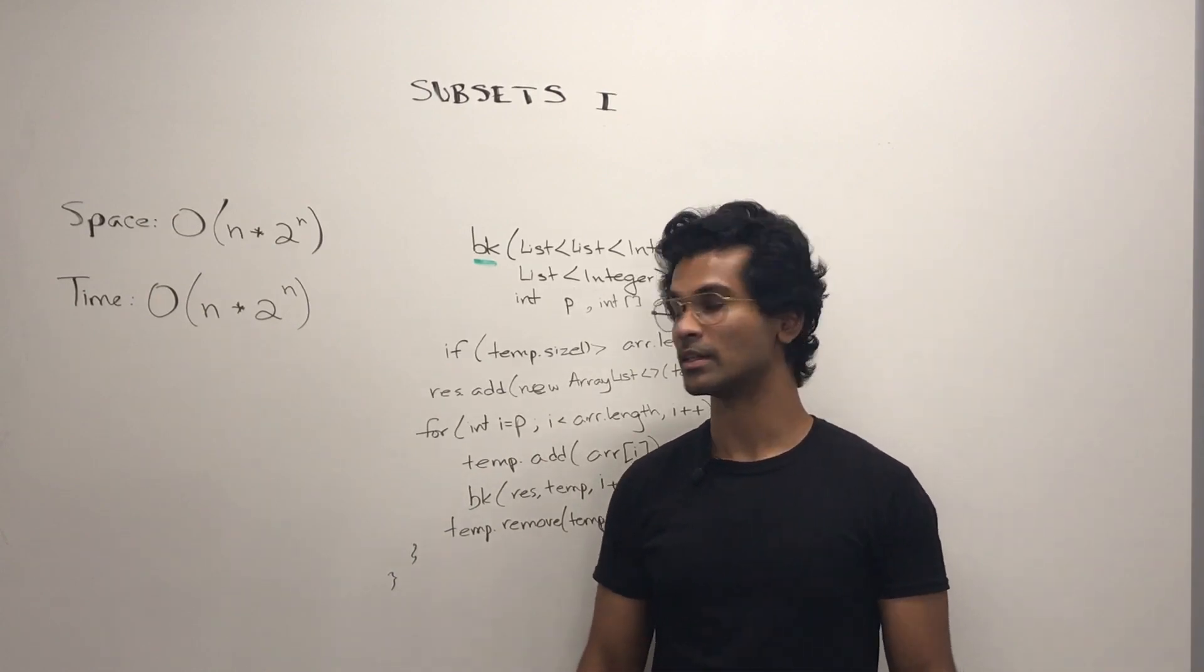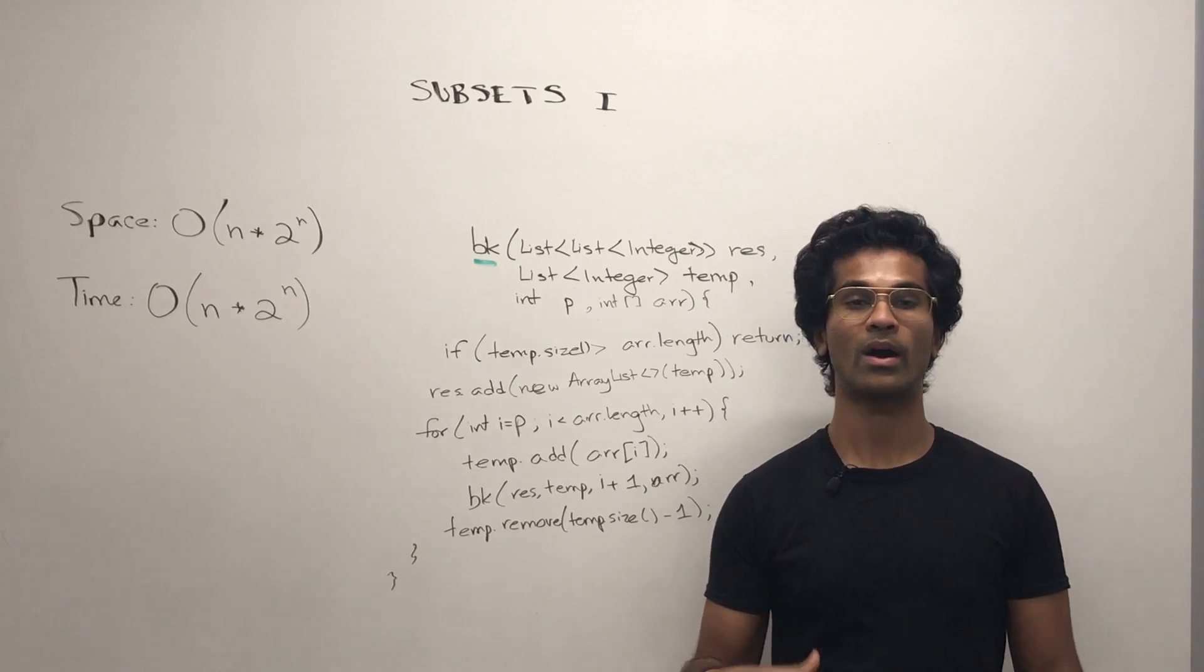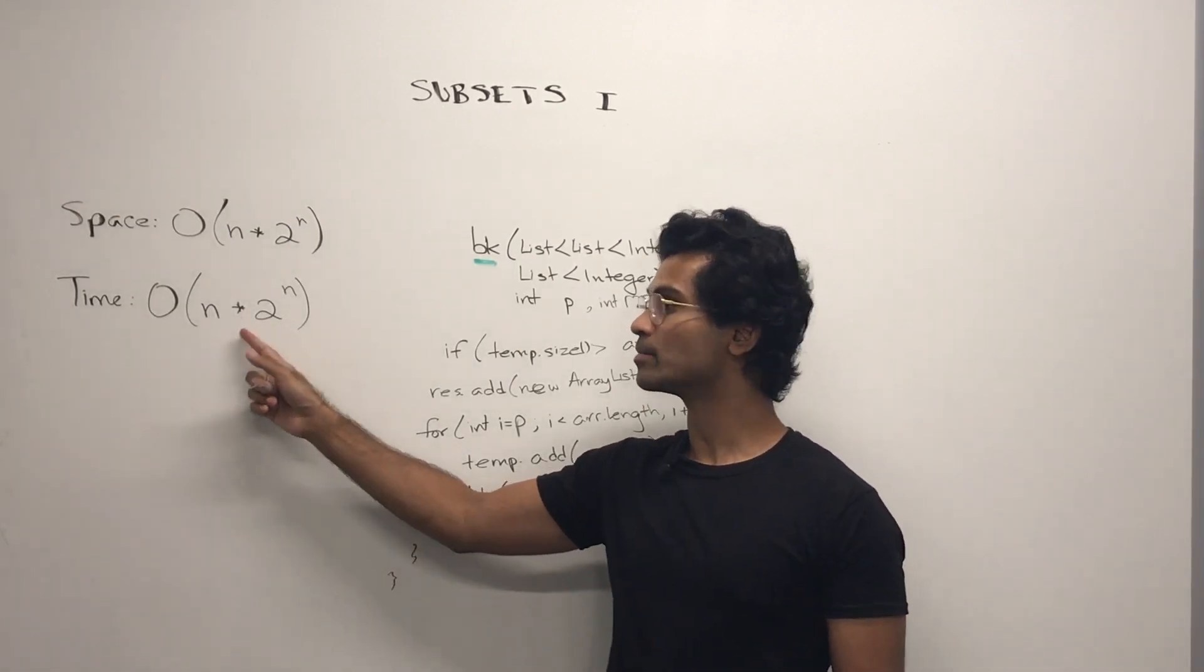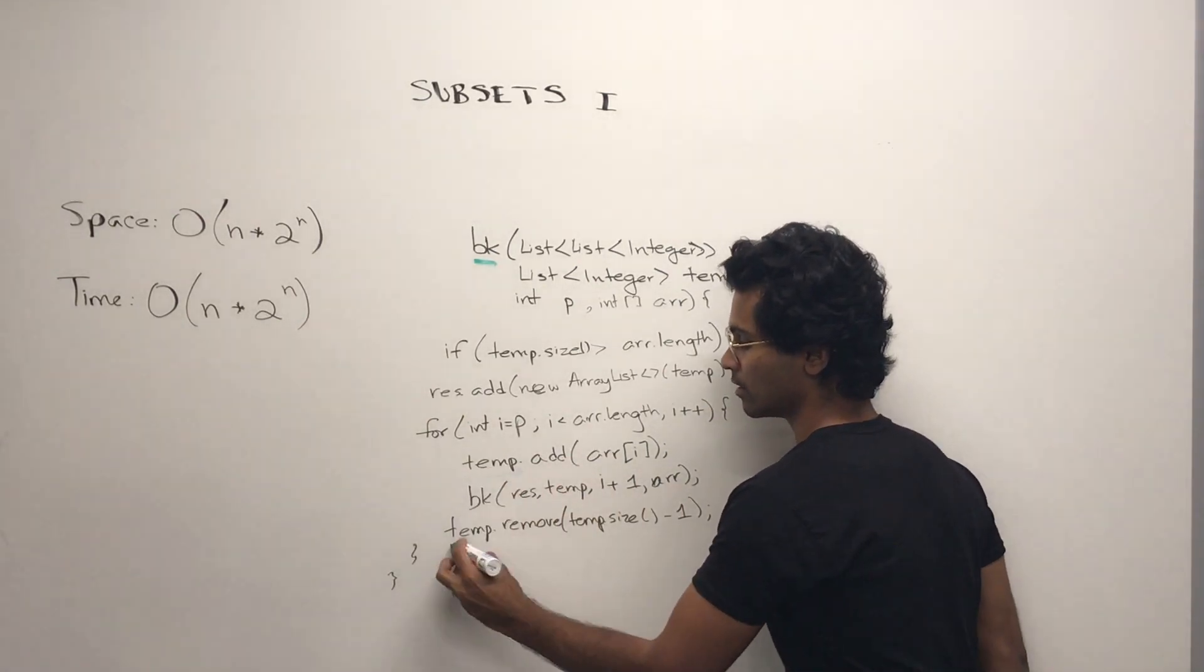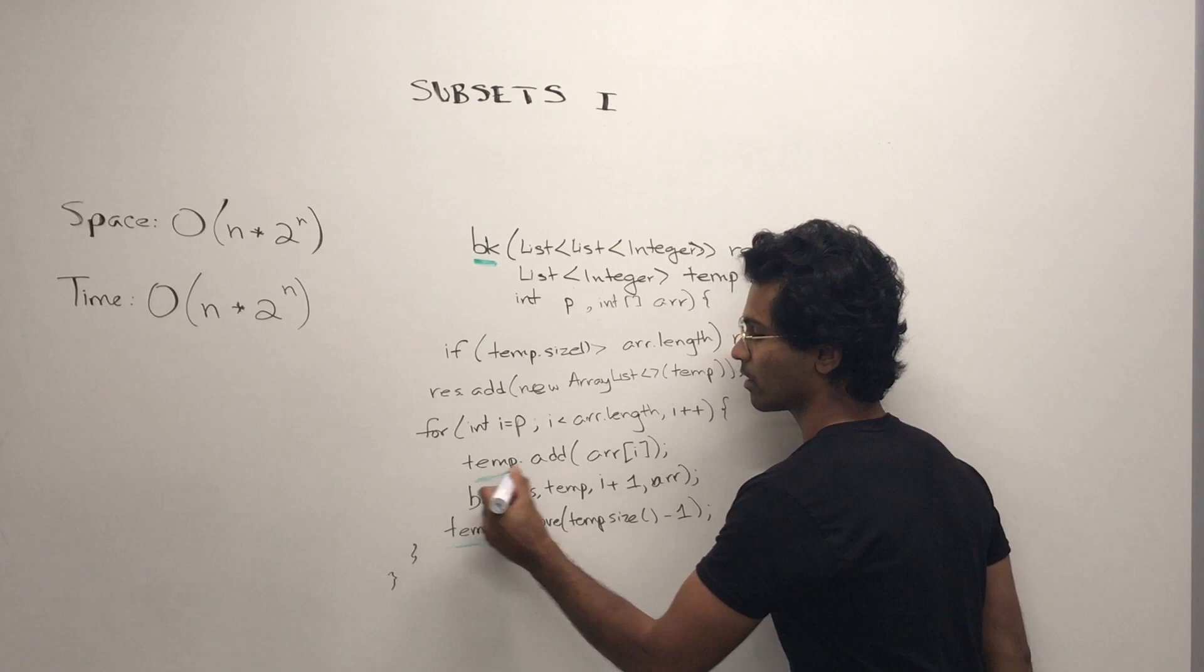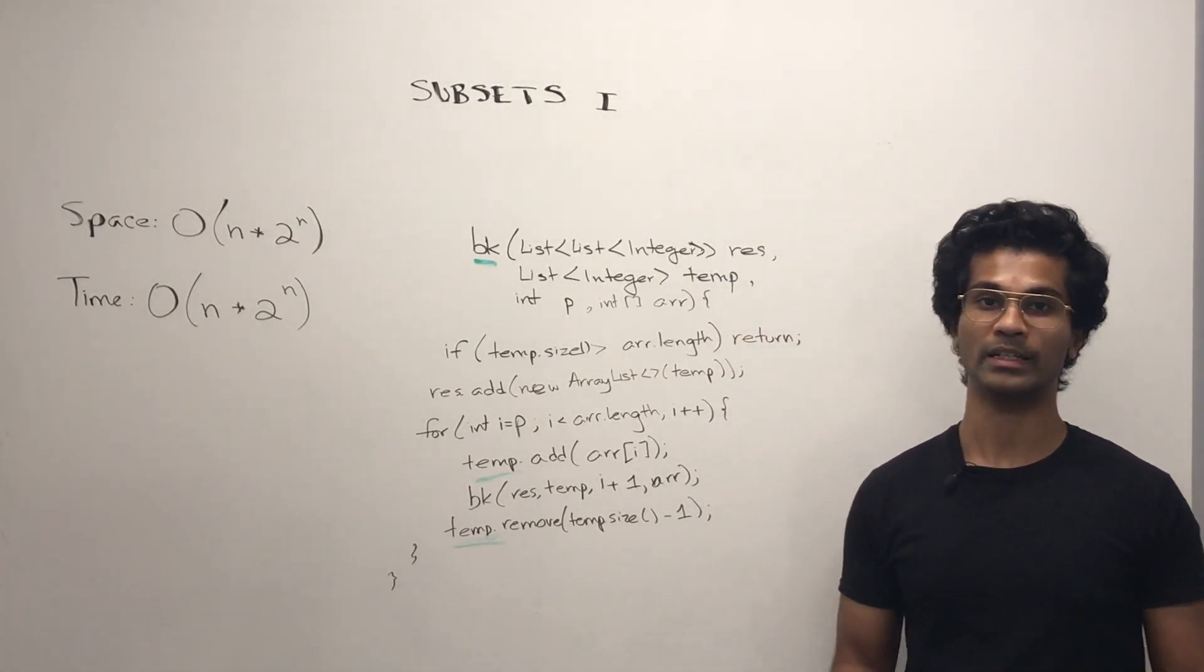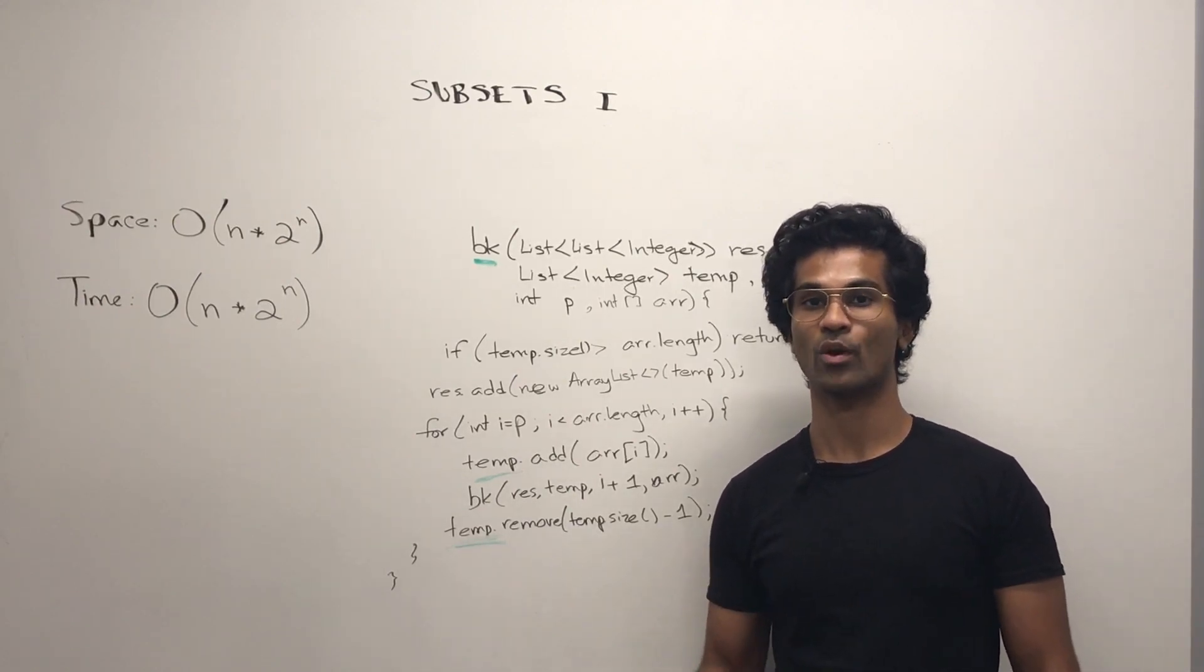Similarly, for time complexity, we're going to have 2 power n first because we have 2 power n recursive stacks. And the reason we're doing n times this is because here we're actually adding numbers to the temporary list. Now, keep in mind, adding and removing from an array list is O of n.